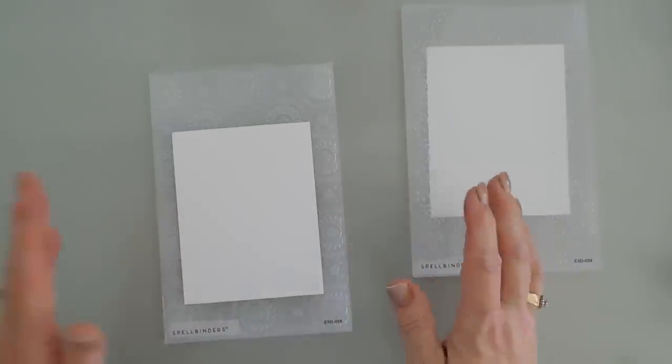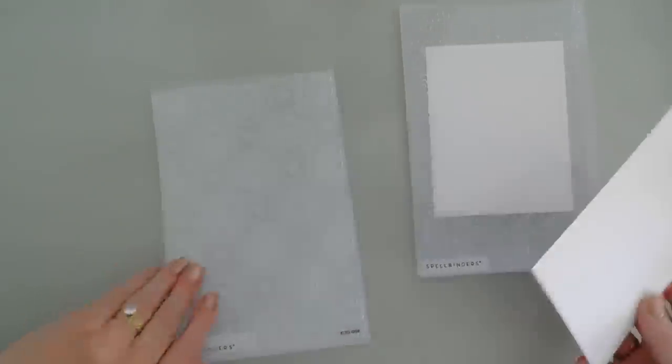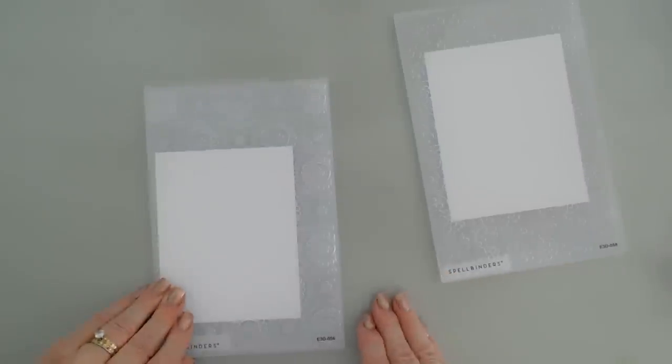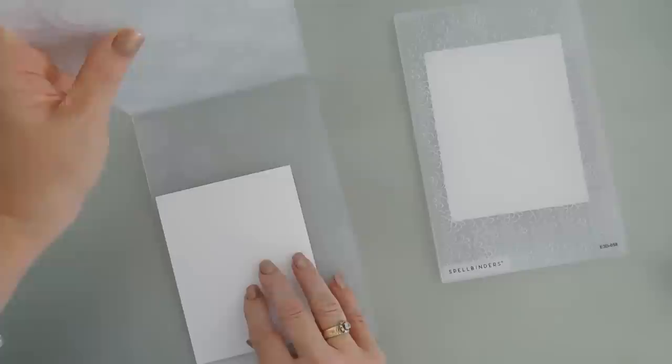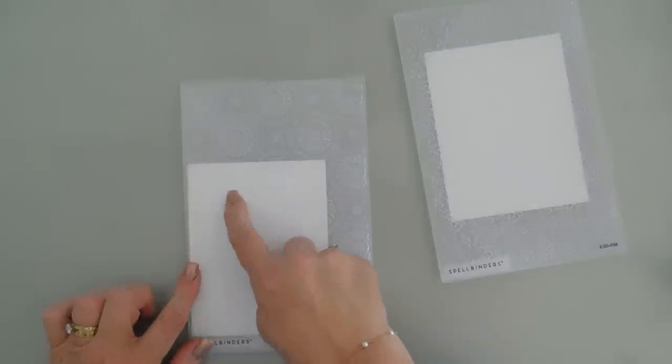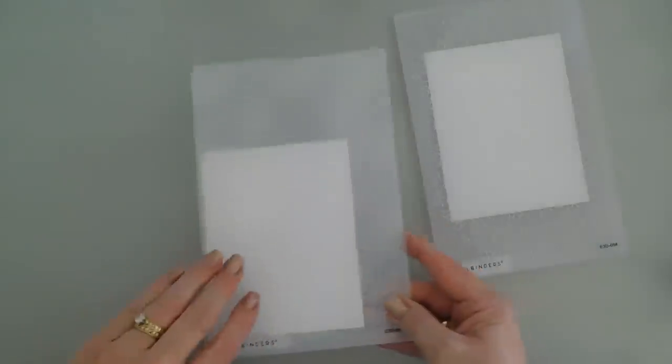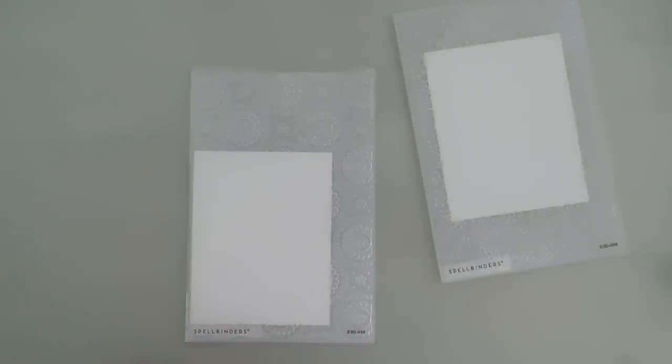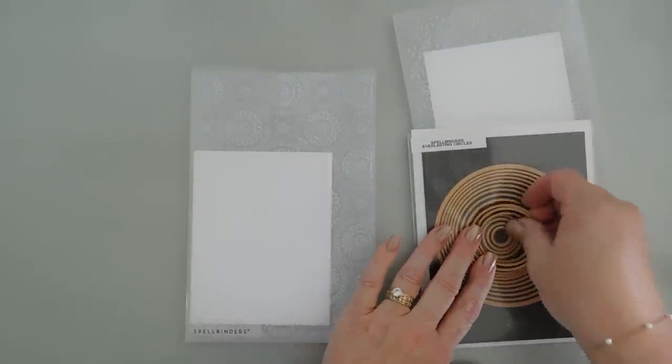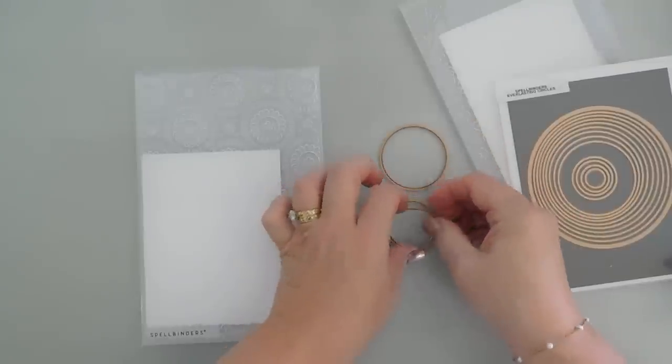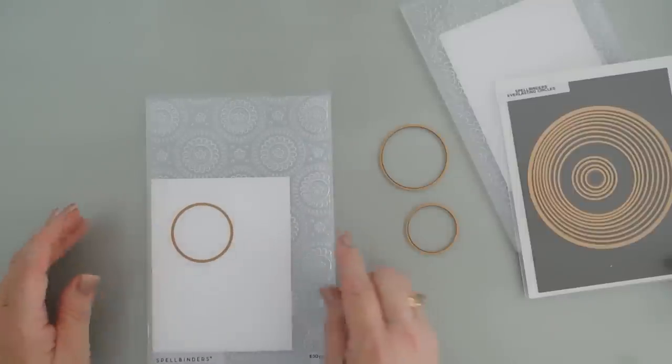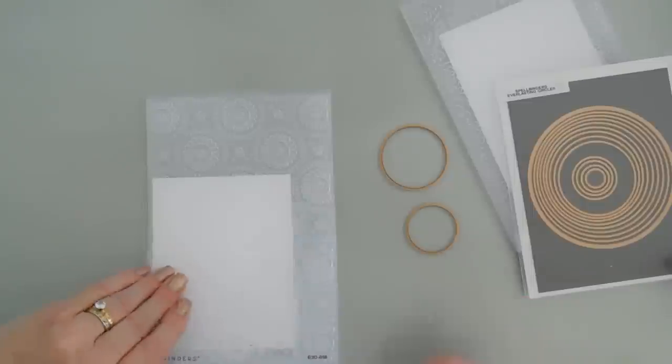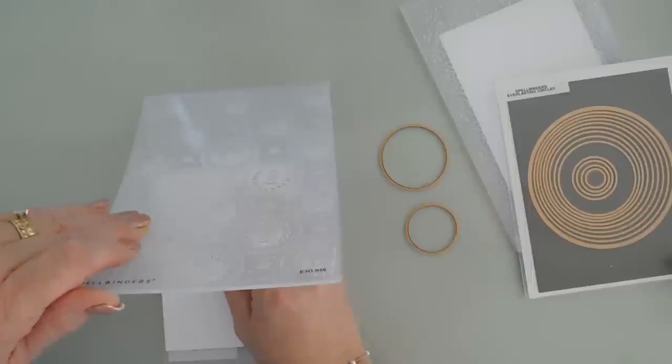But if I put it just anywhere, my circle's going to end up just anywhere. So I'm going to find a circle and use it as my guide on where I want it in my card. And I think I want a window right here in this section. I want this circle cut out right here. So I'm going to leave this in here as a guide. I'm going to bring in my circle dies.